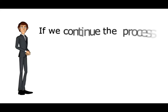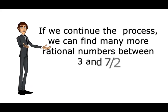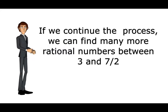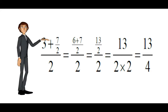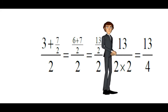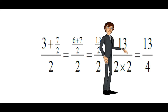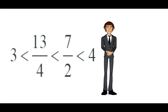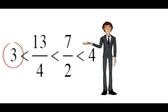If we continue the process, we can find many more rational numbers between 3 and 7 by 2. The average of 3 and 7 by 2 is equal to 13 by 4. So the two rational numbers between 3 and 4 are 13 by 4 and 7 by 2.